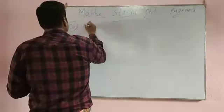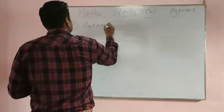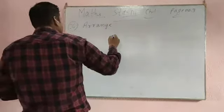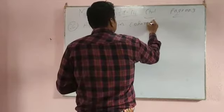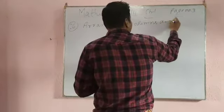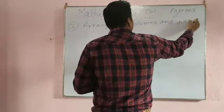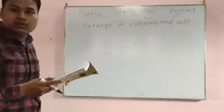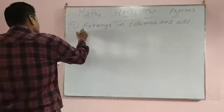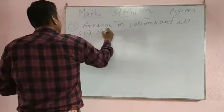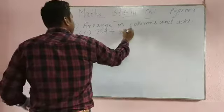Question number 26 is arrange in columns and add. Everyone knows that you have read in standard 1 also, in standard 2 also. But first you see the question - 289 plus 386.